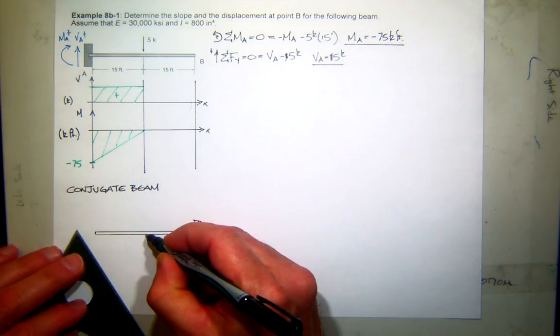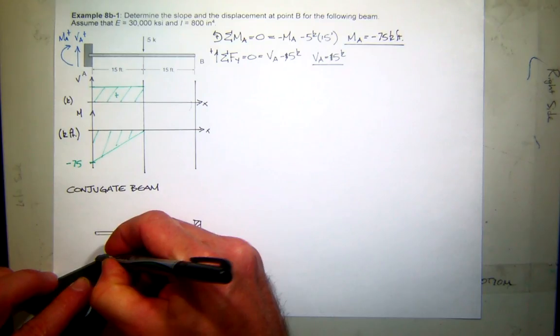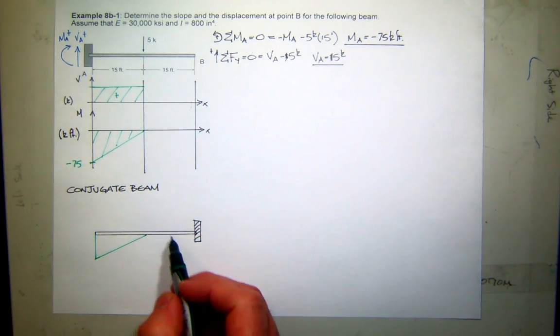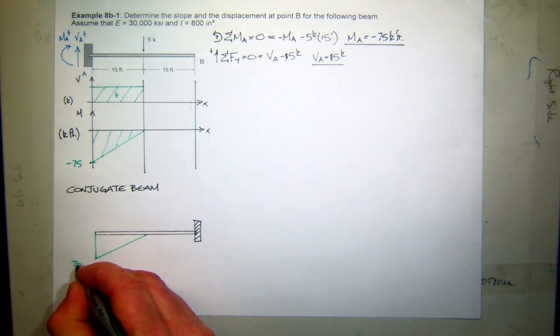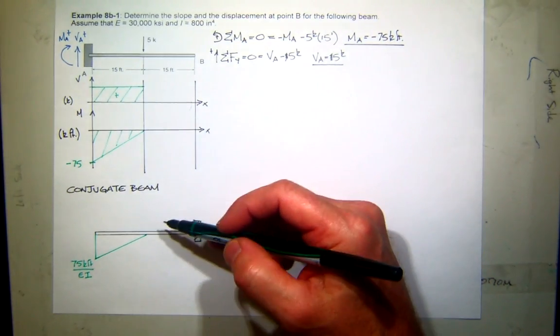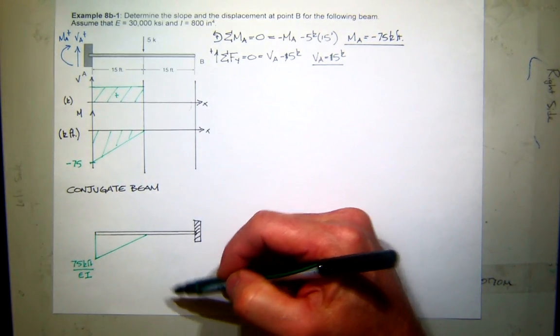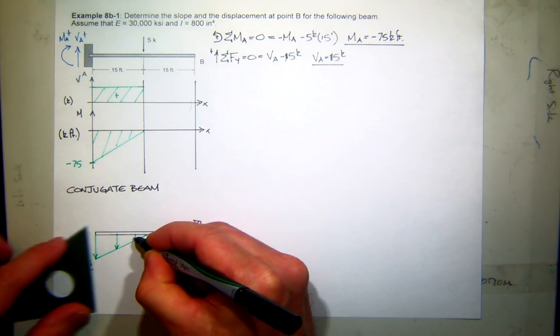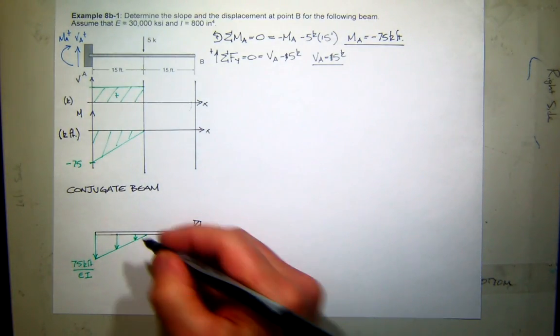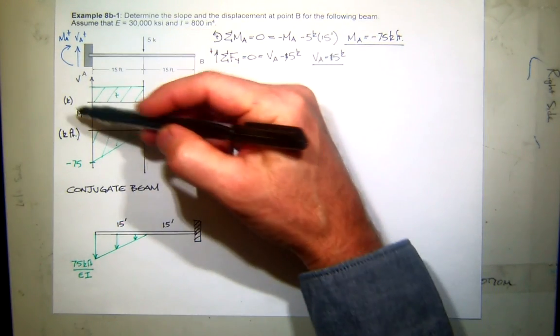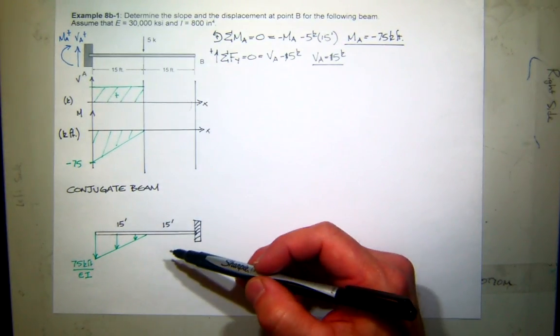And now I'm going to apply this moment as load on my conjugate beam. Now what I like to do is just take my moment diagram and just put it right on the beam. So in our case, starting from the center and projecting down, that's what it looks like. And remember, we load the conjugate beam with the moment divided by EI. Now this is negative moment. So which direction is negative load, up or down? Down. So our structure looks like that. And just to remind you that this was 15 feet, and this was 15 feet. So now we've converted our original problem into a conjugate beam problem, and all I have to do here is do what?